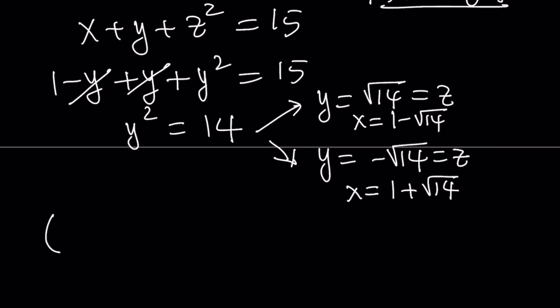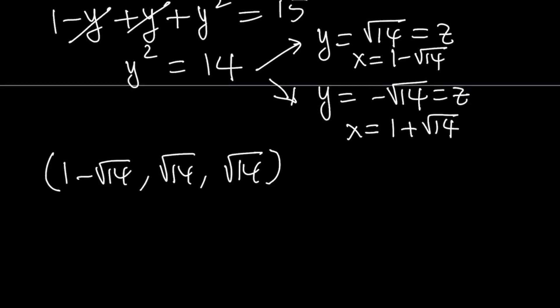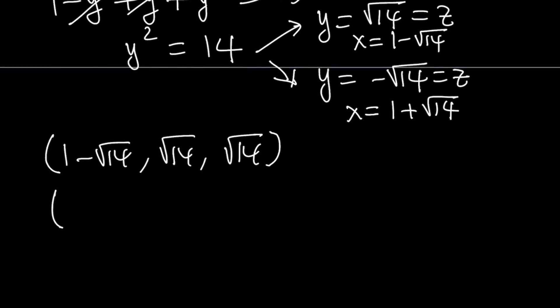So one of them is going to give us (1 minus root 14, root 14, root 14). This is one of the ordered triples. And then another scenario will be (1 plus root 14, negative root 14, negative root 14).